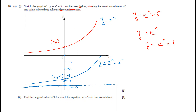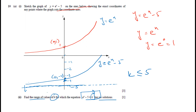Now find the range of values of k for which the equation eˣ - 5 = k has no solution. As we discussed, this graph will never go below -5, so k less than or equal to -5 will give no solution, because y = eˣ - 5 never goes below -5.